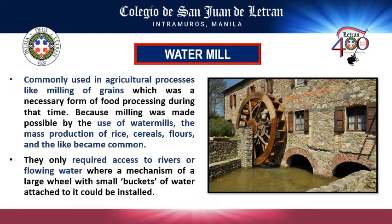Second is the water mill. This water mill addressed the problem in mass production. The difference between the wheel of the Sumerian and the water mill made by the Greeks is that the Sumerian wheel is manually operated, while the Greek water mill requires access to rivers or flowing water, which mills grain automatically in mass.